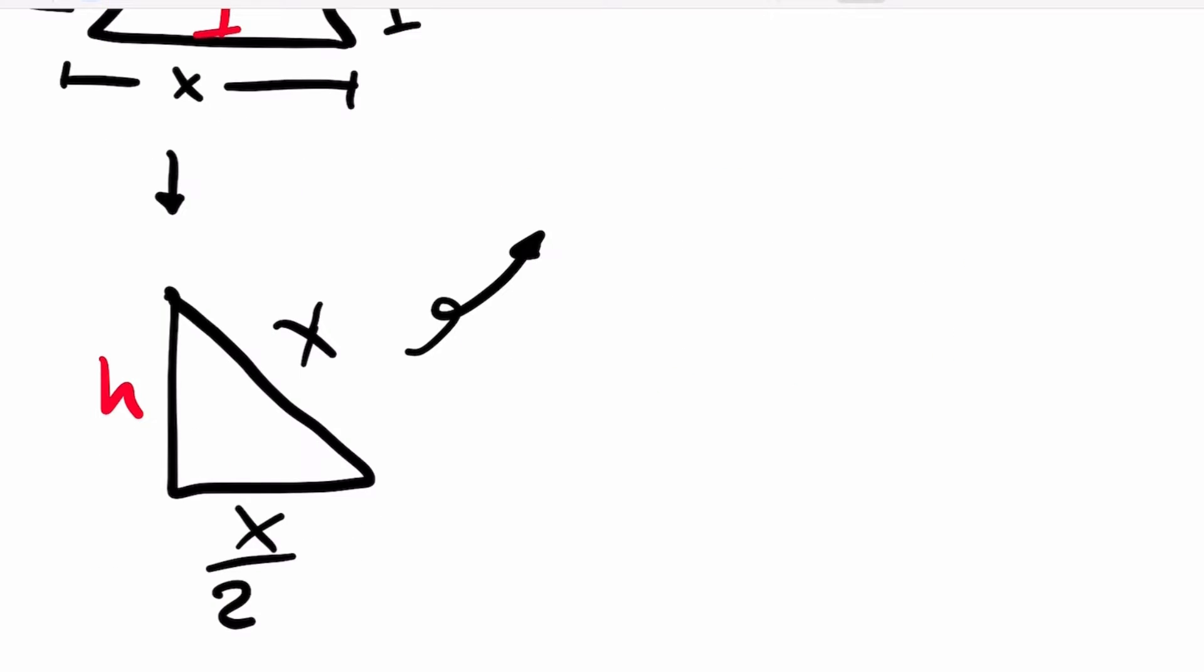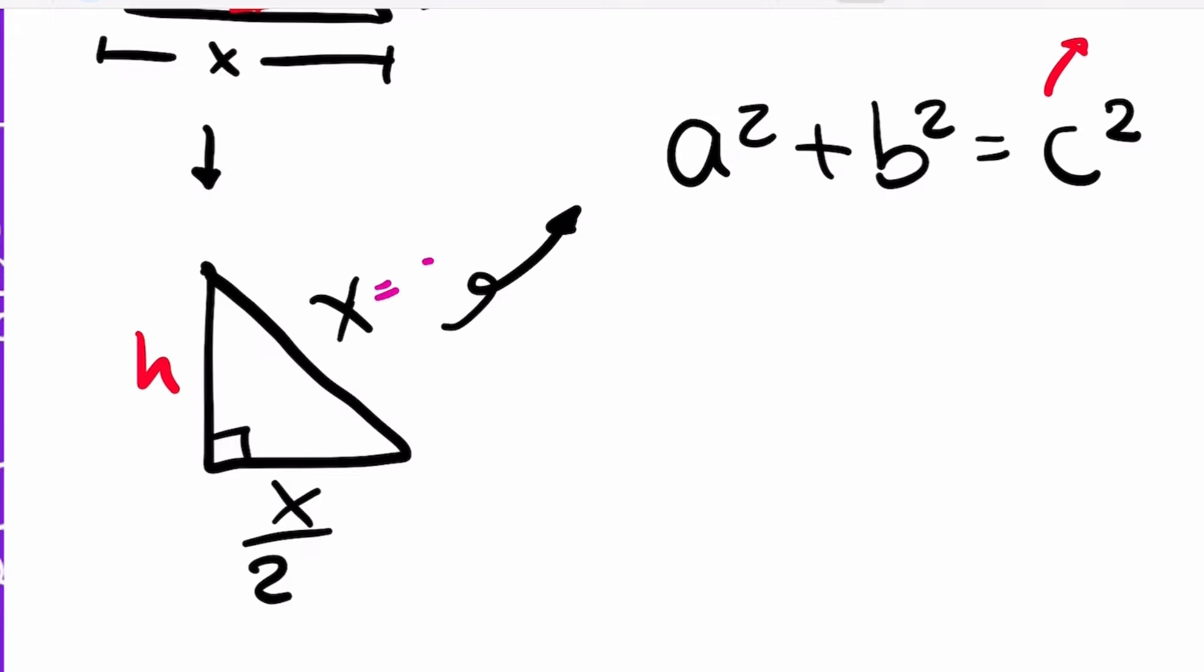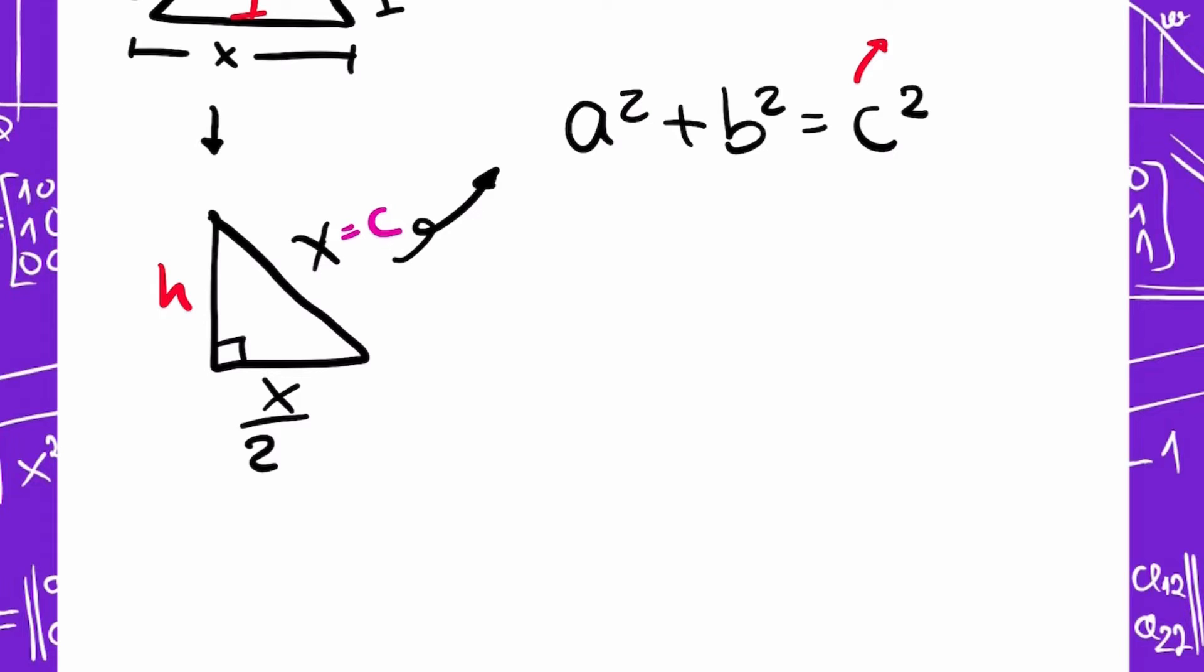We're going to use Pythagorean theorem because we have a right triangle, and we only can use this if we have a right triangle. The theorem says A squared plus B squared equals C squared. C is the hypotenuse. In this case, C is X because the hypotenuse is the one that is inclined, and the other sides are H and X divided 2. So I'm going to replace in this formula.